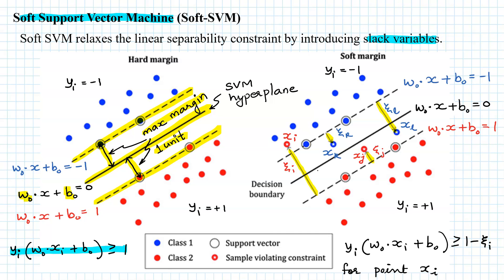We expected all data points to be at least one unit distance away from the separating hyperplane, but if a data point violates the constraint it will be at a distance of (1 − ξᵢ) from the hyperplane. The violation can be less than one unit, as is the case for points xk and xj, or more than one unit, as for points xᵢ and xl, which lie on the wrong side of the separating hyperplane.